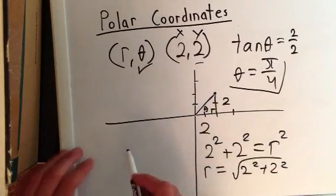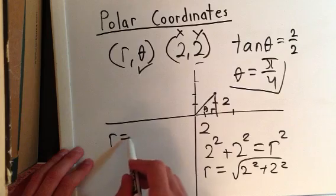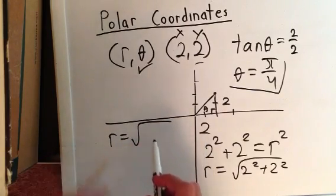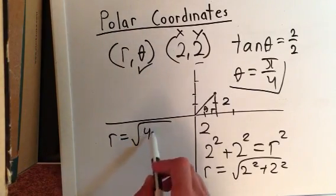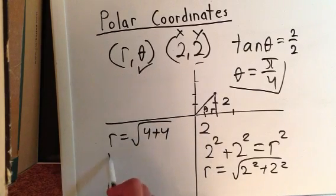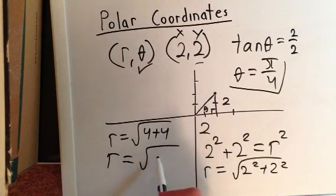In other words, r is equal to the square root of 4 plus 4. r is equal to √8, obviously.